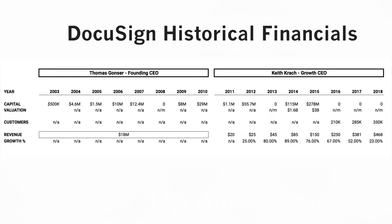Hats off to their founding CEO — I think he did a great job getting it started. In the first half of its life, the company only had about $18 million in revenue. When Keith took the torch, his first year had $20 million in revenue. If you look at the revenue growth, you can see it goes up 80%, almost 90%, 70%, and even the last reported year was up 50%. Their fiscal year ends January 31st, so when it says 2011, it's actually basically the year 2010.